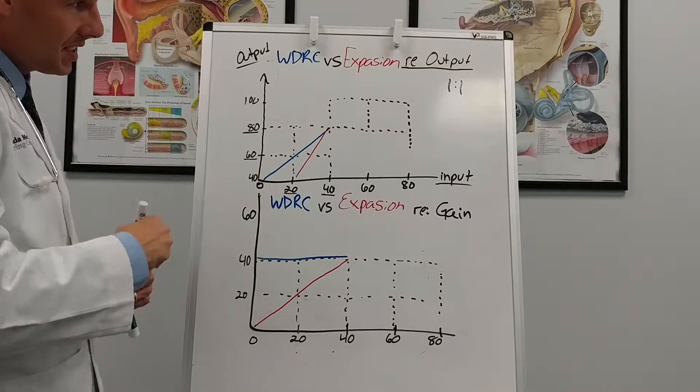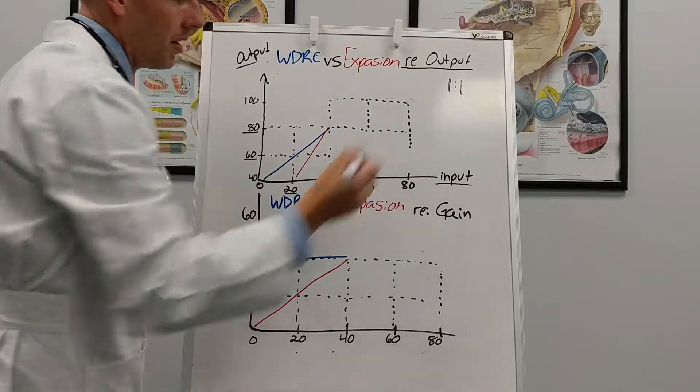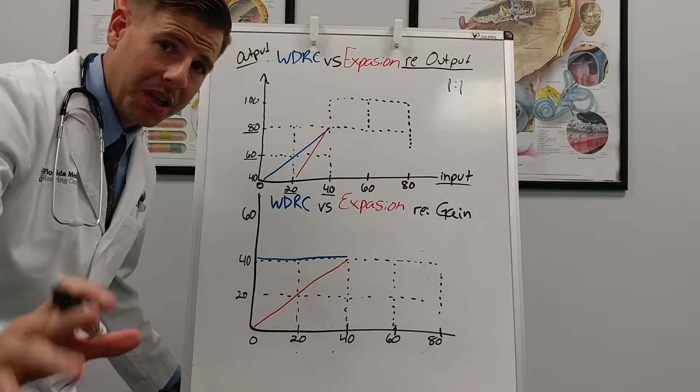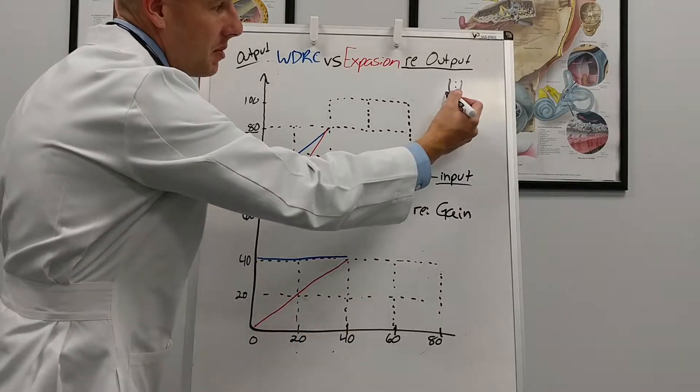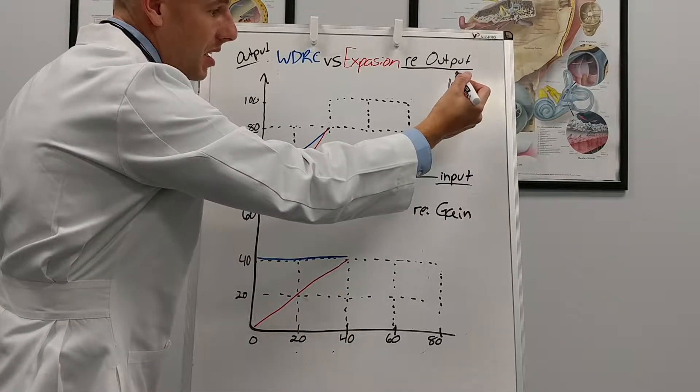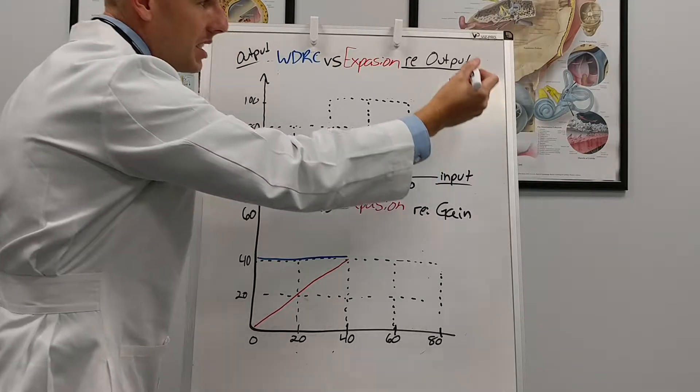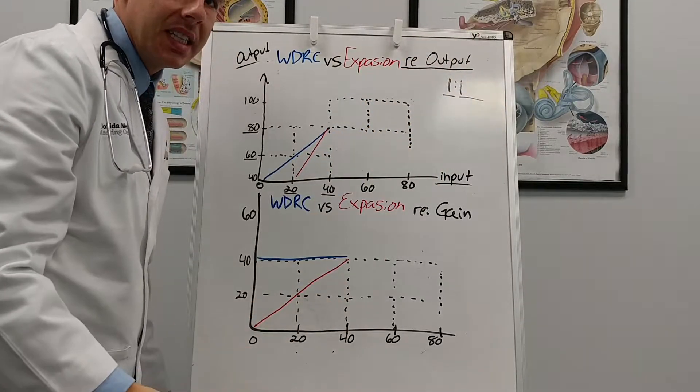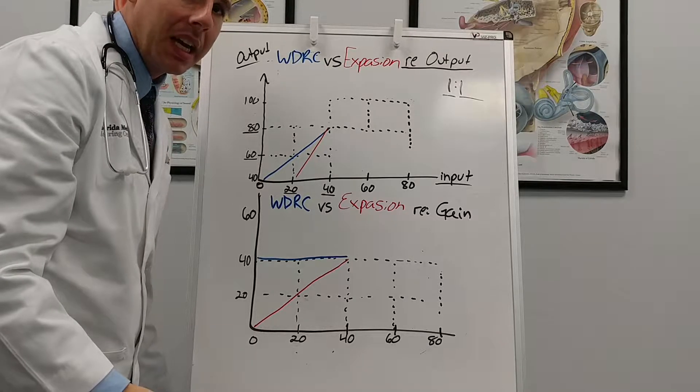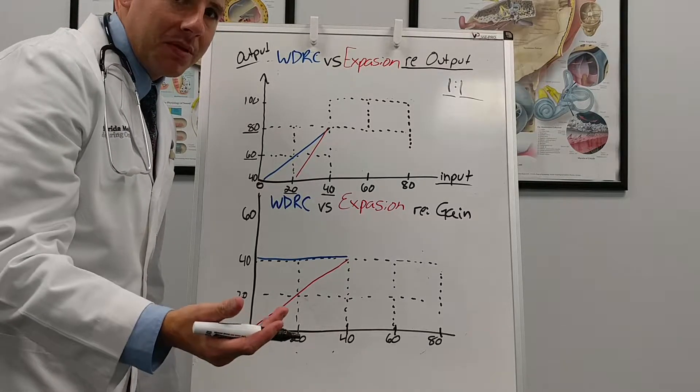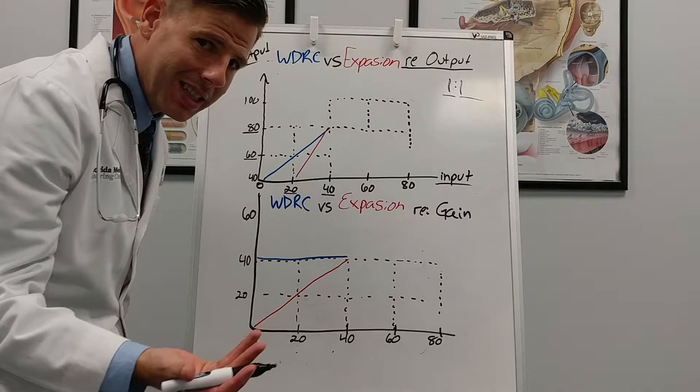But the easiest thing to start with is linear one to one. Linear means no compression and linear basically means that if I have 10 decibels that is coming into the hearing aid I'm going to allow 10 decibels to go out of the hearing aid into the patient's ear. Okay now a lot of times there's some gain involved with that because they need hearing aids.